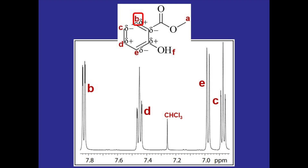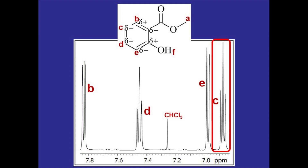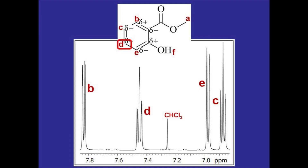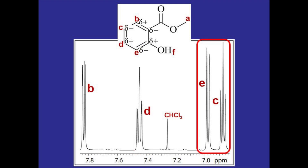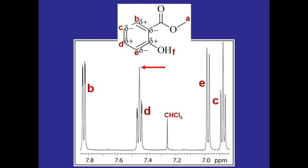Now that all peaks are labeled, we can start considering leaning. Hydrogen B is coupled to hydrogen C, so its signal should be leaning towards the signal produced by hydrogen C — and if we draw a line from the top of the outer peak to the inner peak, it's clear that it is leaning towards hydrogen C. Hydrogen D is coupled to both hydrogen C and E, so its signal should be leaning towards both of theirs, and drawing a line from the outer peak to the inner one confirms this. With triplets, the middle peak is always taller than the two outer ones, so when considering lean you have to look at the tops of the two outer peaks instead of the middle one. This is just another tool to help label and confirm peaks.